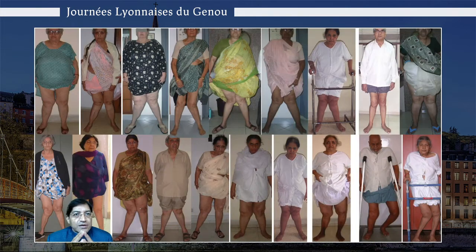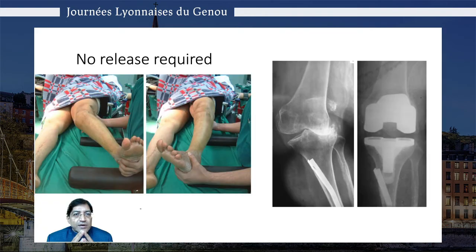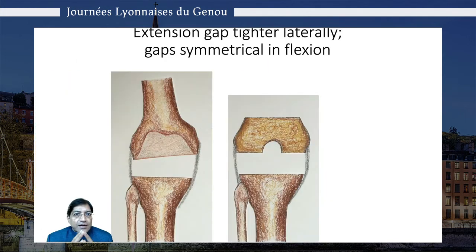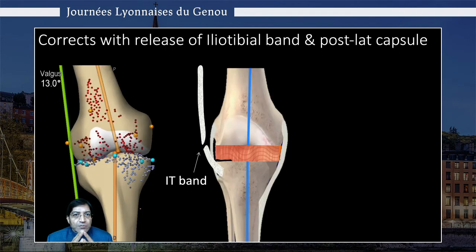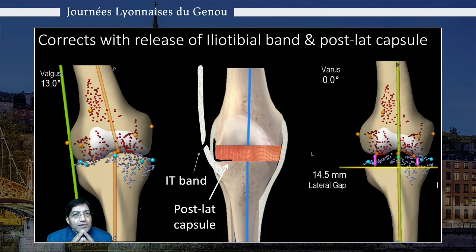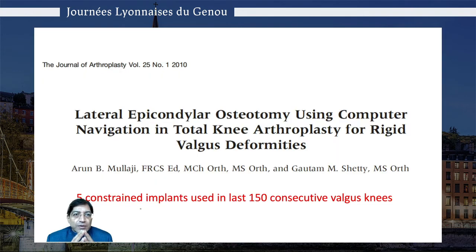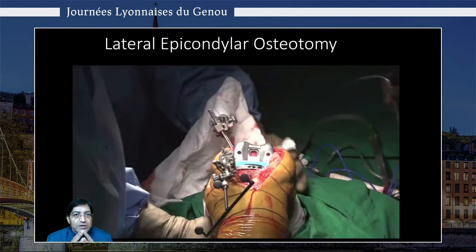In valgus knees, most of them do not require any release, like in this patient under anesthesia. If the extension gap is very tight laterally, we release the IT band and the posterior lateral capsule, and that should afford full correction. If that does not occur, we do a lateral epicondylar sliding osteotomy. We've used only five constrained implants in the last 150 consecutive valgus knees.